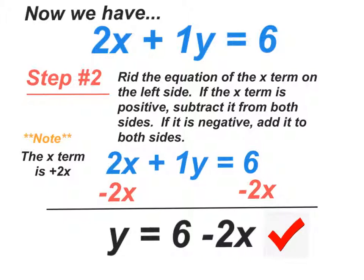So now, what you have is minus 2x on the left, minus 2x here on the right. These guys become a 0, and what you're left with is 1y over here. Remember, you do not need the 1 in front of y. And then now, on this side, because they're not like terms, you're going to have 6 minus 2x.